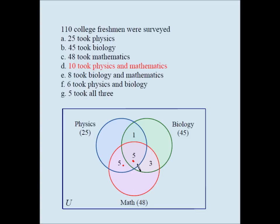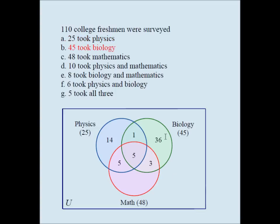Remember we said these four numbers should add up to forty-eight and these four numbers should add up to twenty-five. These four numbers should add up to forty-five. Twenty-five took physics: from twenty-five I subtract one, five, and five — the sum of five, five, and one is eleven, giving me fourteen. Forty-five took biology: from forty-five I subtract one plus five plus three, I get thirty-six. Forty-eight took math: from forty-eight I subtract five plus five plus three, I get thirty-five. I have a Venn diagram that's almost full.